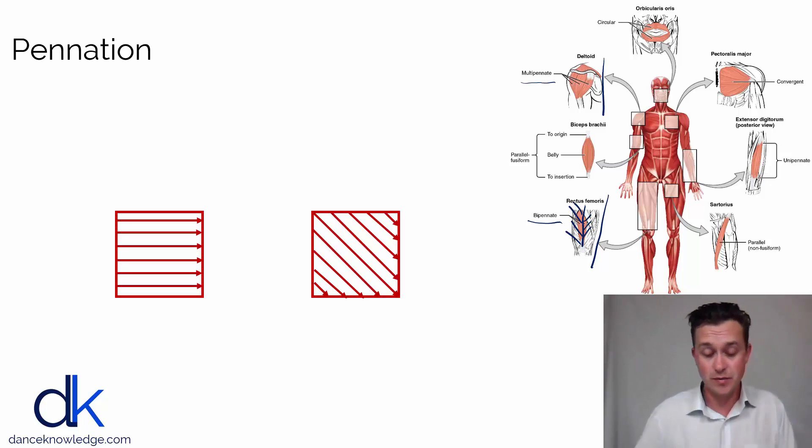And so as you may guess, the multipennate therefore means that we've got multiple sections within the deltoid and each of those sections have multiple angles of fibers. This helps the muscle to produce force in different directions and to help with stability. And it's important, particularly for a muscle like the deltoid that produces so many different types of shoulder motion.